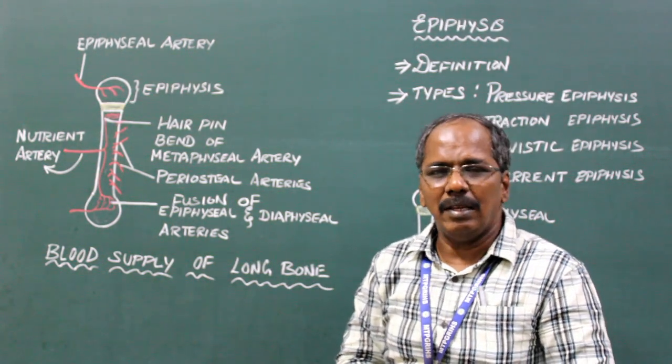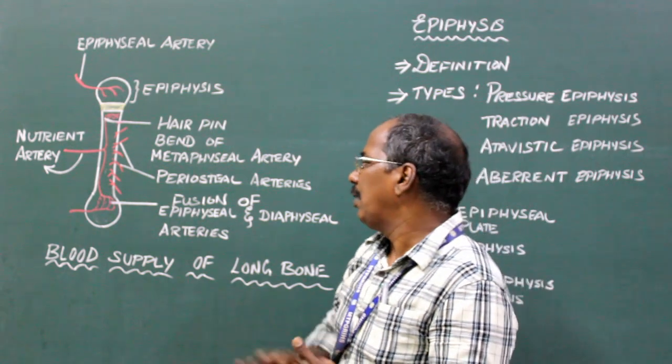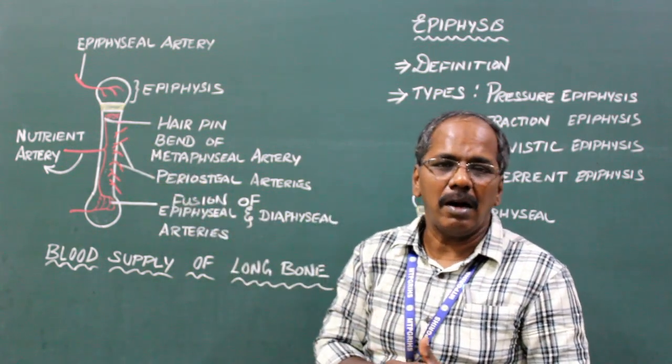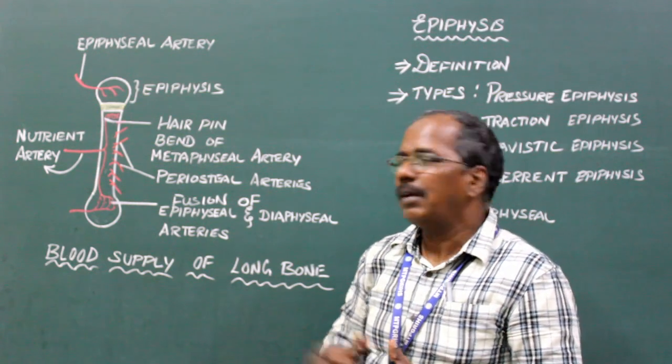The nutrient artery supplies the medullary cavity, inner two-thirds of the cortex, and metaphysis.